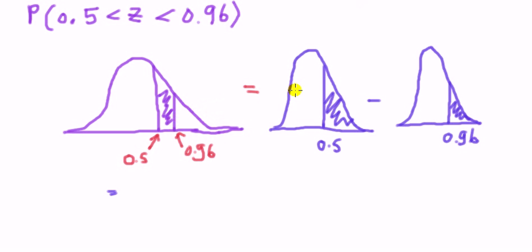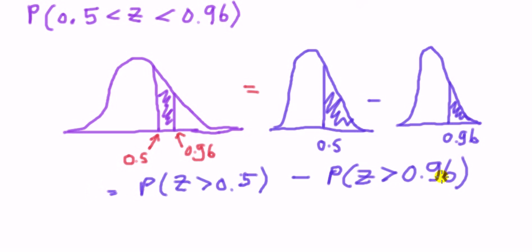So this strip here is equal to that z is bigger than a half, and subtract from that, that z is bigger than 0.96. Writing that in terms of the algebra, there. So this bit goes with this bit picture, and this bit goes with that picture. And now we look up the probabilities, so we want a half and we want 0.96.